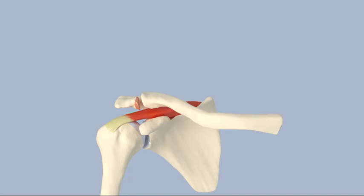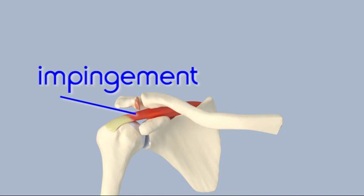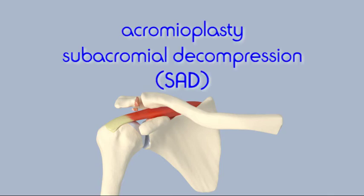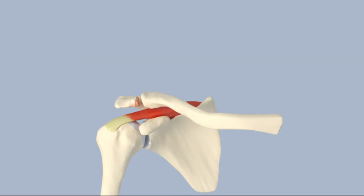If the bone spurs that result from the degeneration of the AC joint cause impingement, they are often removed surgically. This is often done arthroscopically, meaning that a small camera and instruments are inserted through keyhole incisions in the shoulder. The bone spurs are removed and the bottom surface of the acromion is smoothed out. This is known as an acromioplasty or subacromial decompression.